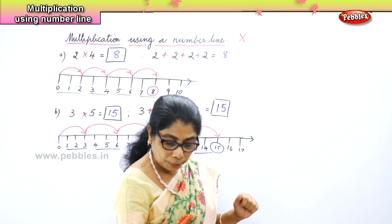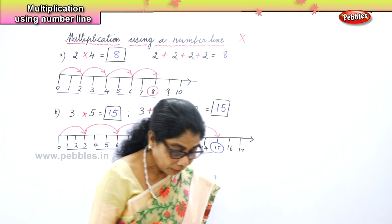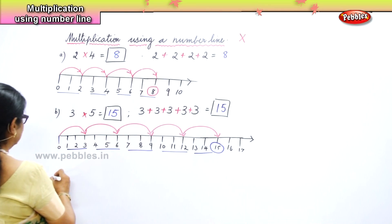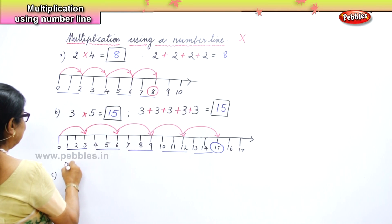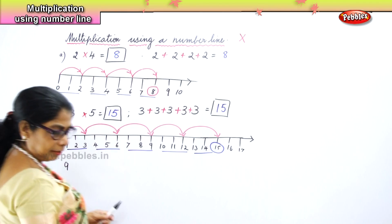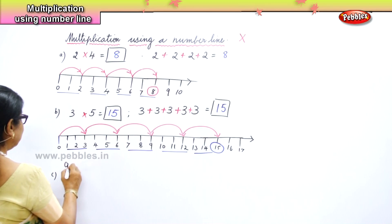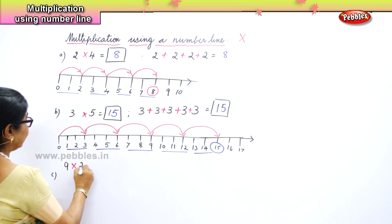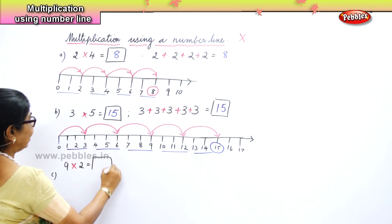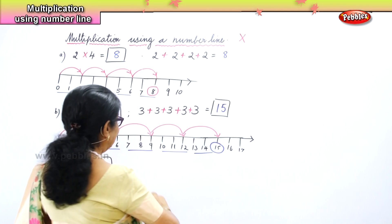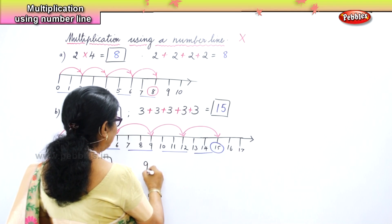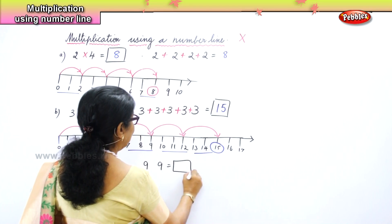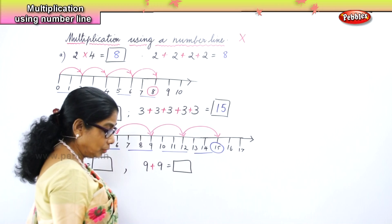Now let's do one more sum. Nine, two times — let's do a simple sum. What is nine two times? It is nine plus nine — that is nine, two times.